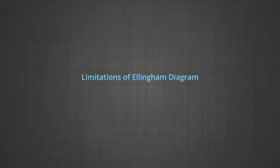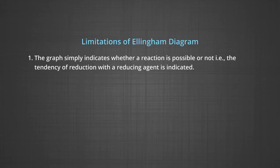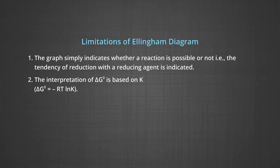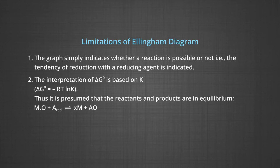Let us see the limitations of the Ellingham diagram. The graph simply indicates whether a reaction is possible or not — that is, the tendency of reduction by a reducing agent is indicated. This is so because it is based only on thermodynamic concepts. It does not say anything about the kinetics of the reduction process; we cannot answer questions like how fast it could be. The interpretation of ΔG° is based on the equilibrium constant K, so it is presumed that the reactants and products are in equilibrium.